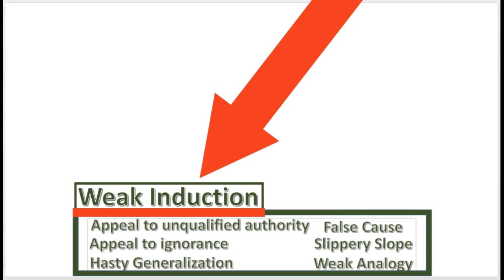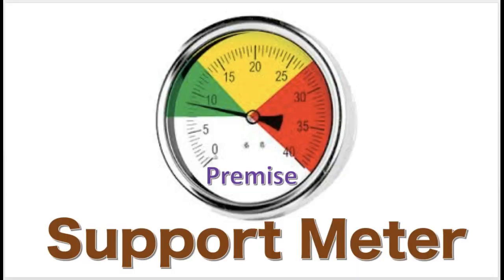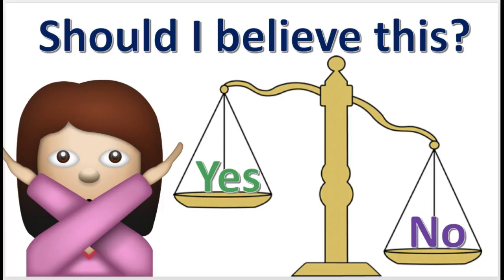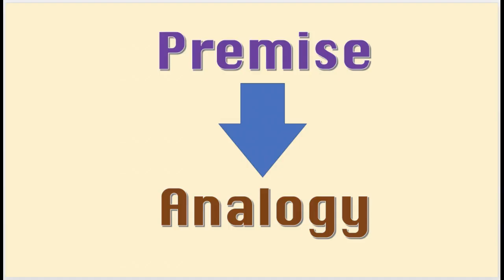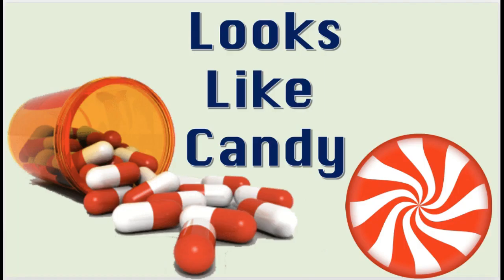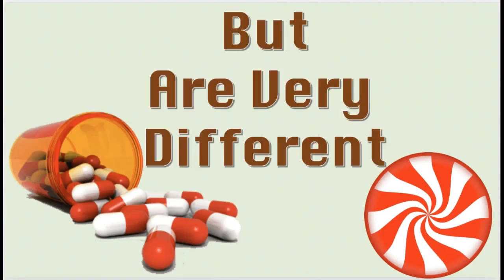The weak analogy fallacy is a fallacy of weak induction, which means not enough support by the premises to rationally believe the conclusion. The weak analogy fallacy is committed when the premises of an argument present an analogy or similarity between two things or situations, but the analogy is not strong enough to support the conclusion.